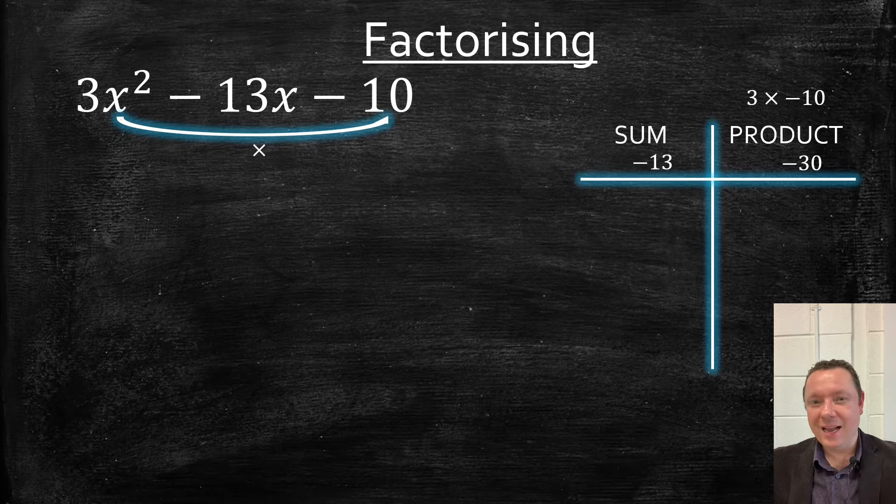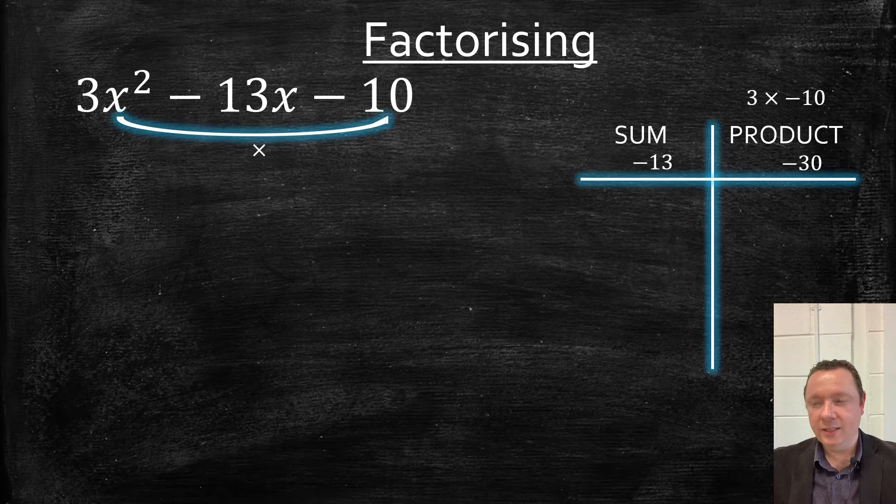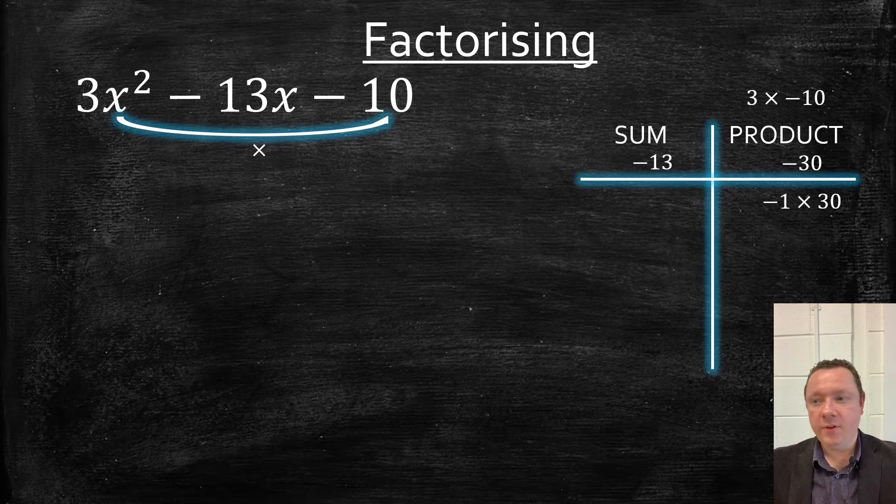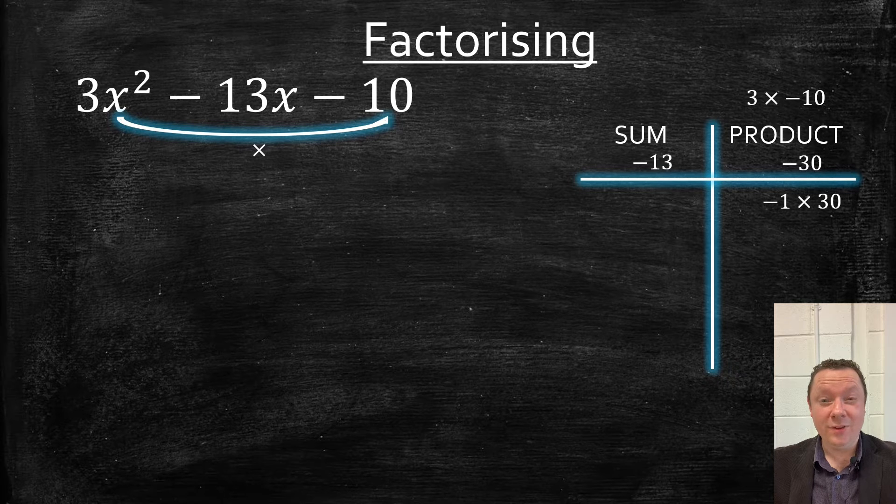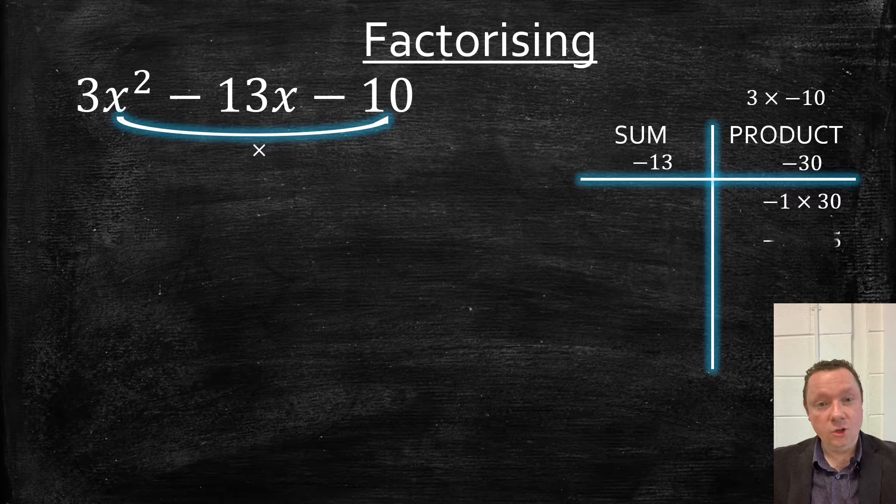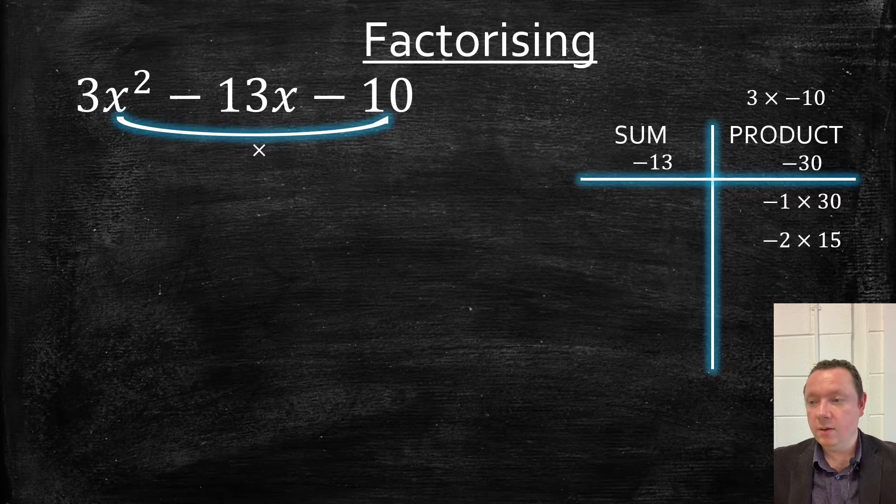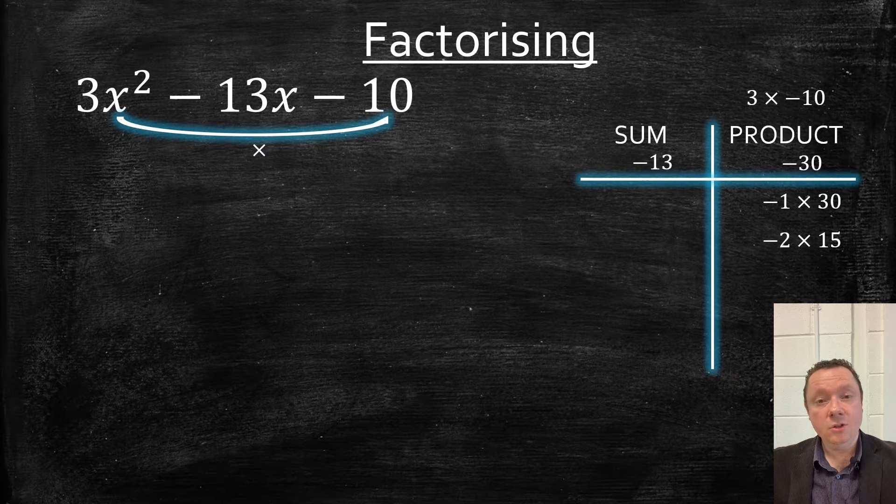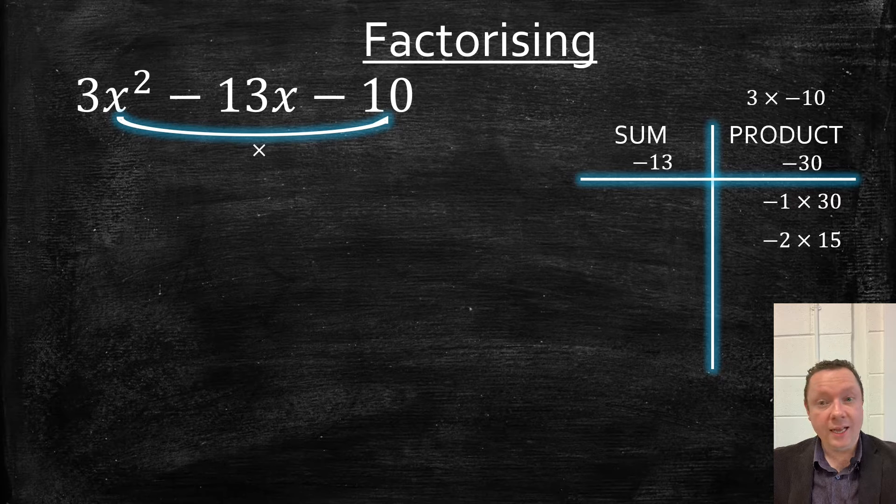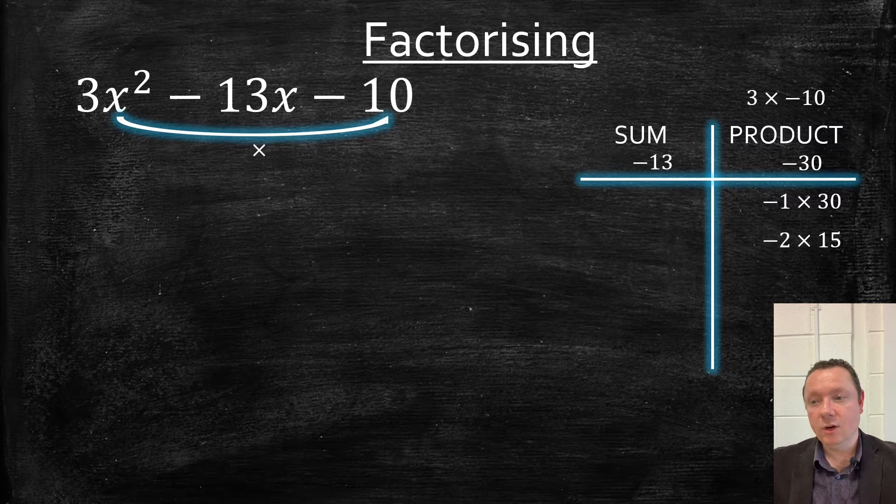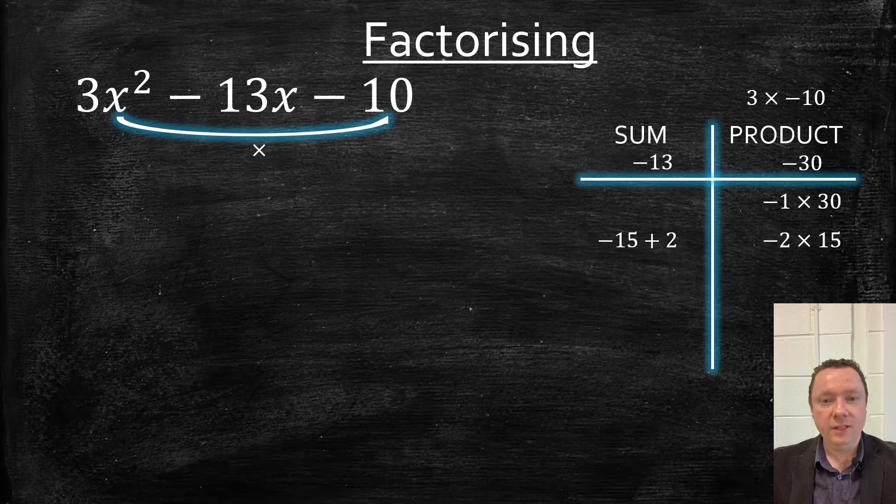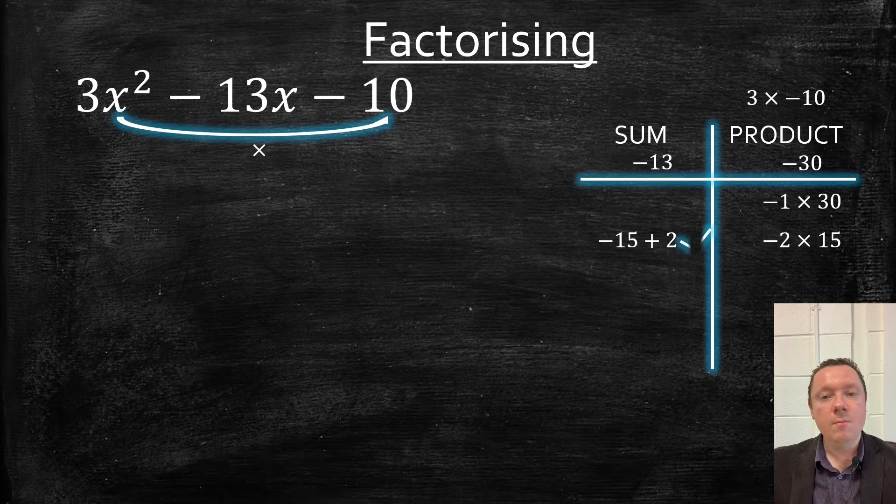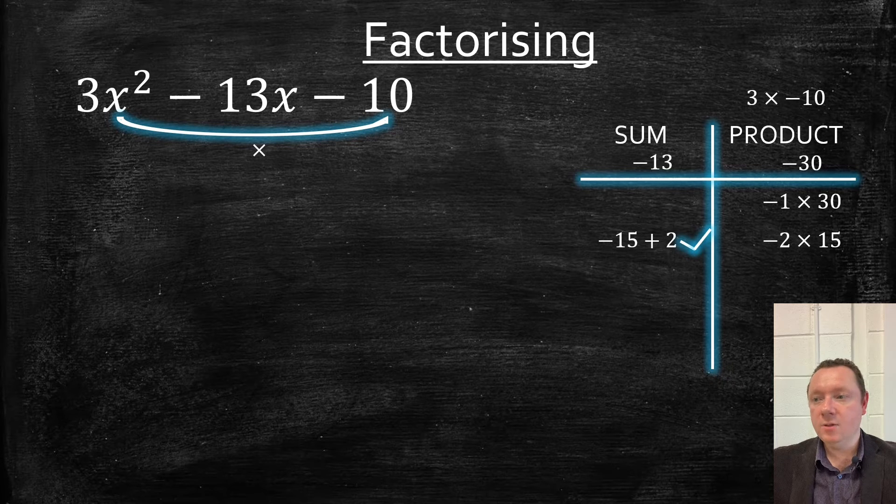You're looking for 2 that make minus 30, but add or take away to make minus 13. Let's try minus 1 times 30. That's obviously not going to give me minus 13. Minus 2 times 15. That's the next obvious one. Oh, that's good. 15 take away 2 is 13. So minus 15 add 2 is minus 13. Minus 15 add 2 is minus 13, minus 2 times 15 is minus 30.